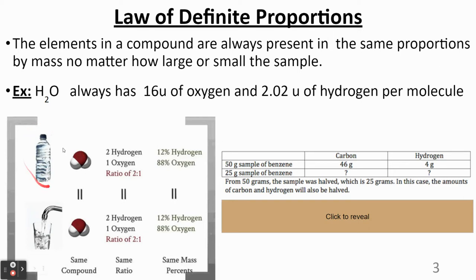So here we have two samples of water, one in a water bottle, and then one from the tap. And regardless of where that water comes from, water bottle or tap, the molecules are always made up of one oxygen and two hydrogens. And it doesn't matter where the sample is from, it's always going to be that same ratio of hydrogen to oxygen. It's two to one.